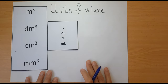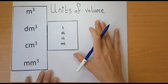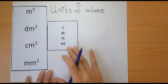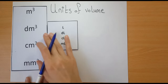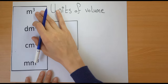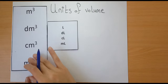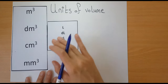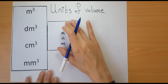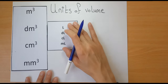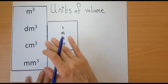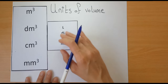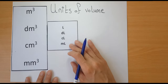Hello, in this video we will speak about units of volume. We have different units of volume. I grouped them in two groups: the cubic meter and its derivatives, and the liter with its derivatives — decilitre, centilitre, and millilitre. I put each one of them in decreasing order.